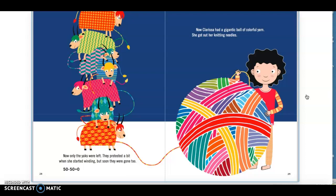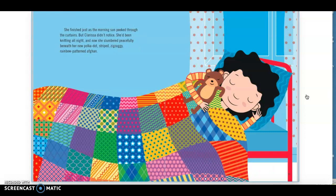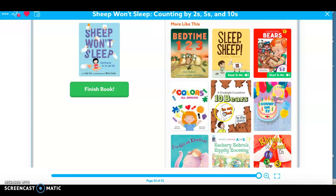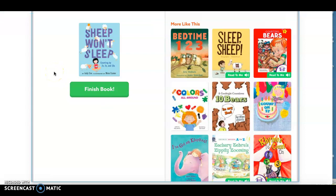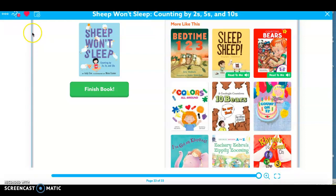Now Clarissa had a gigantic ball of colorful yarn. She got out her knitting needles. She finished just as the morning sun peeked through the curtains, but Clarissa didn't notice. She'd been knitting all night, and now she slumbered peacefully beneath her new polka dot striped ziggy zaggy rainbow pattern afghan. The end. I really enjoyed that book because of the llamas. So if you ever need some help falling asleep, skip counting might be the answer for you.